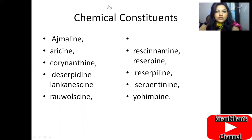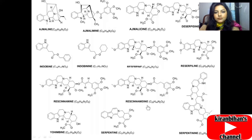The chemical constituents of Rauwolfia serpentina include: ajmaline, ericine, corynanthine, deserpidine, lankensine, rauwolficine, rescinnamine, reserpine, resalpine, serpentine, and yohimbine. The chemical structures of ajmalicine and other constituents can be seen in the slides, and should be memorized through practice.